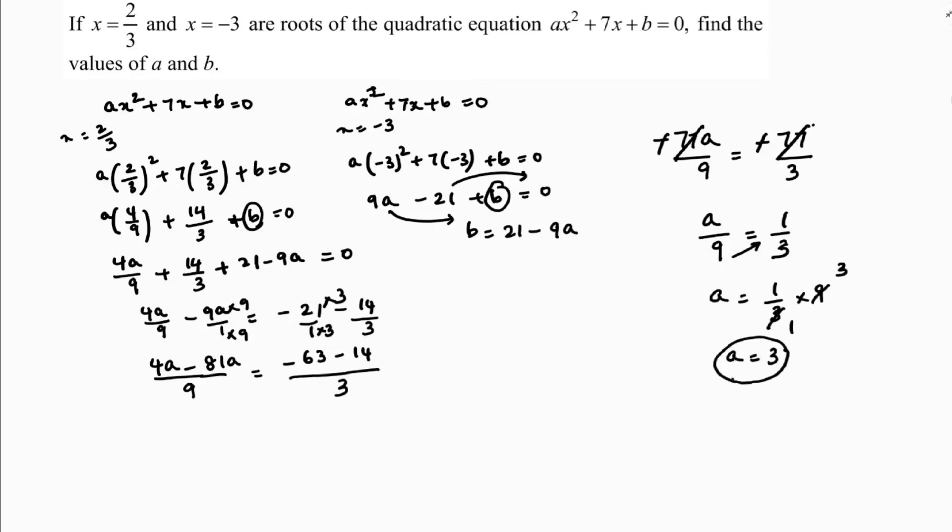Now, we need to find b value. So, if I will write here, b equals 21 minus 9 times 3, 21 minus 27 is minus 6. Therefore, the value of b is minus 6, a is 3.